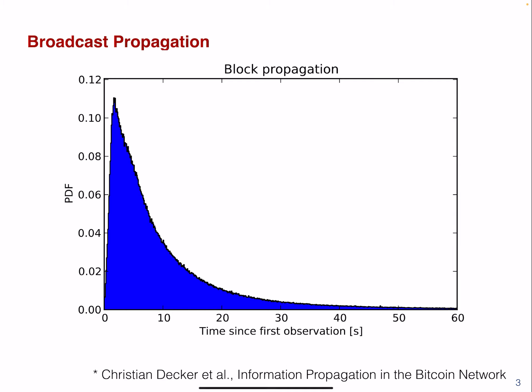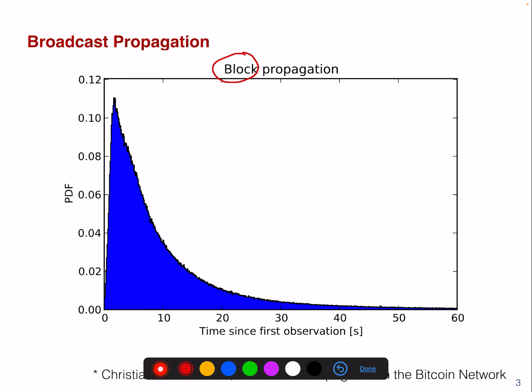If you look at the network propagation here, you can see on the x-axis the time since some object was first observed — and this object in this particular case is a block. On the time axis you have a density function that tells you how long it takes. There are many peers that basically receive your block rather early, but it can also happen that it takes up to 50 or 60 seconds for a block to be propagated to a particular node. This is because of broadcast propagation — some peers are just at the edge of the network where it takes a lot of time to receive that data.